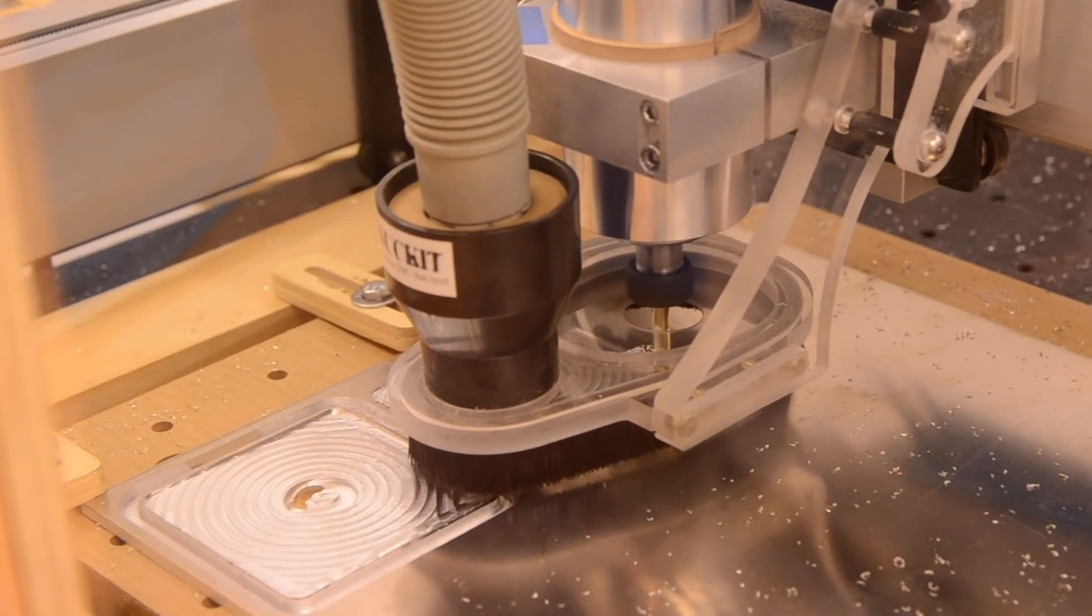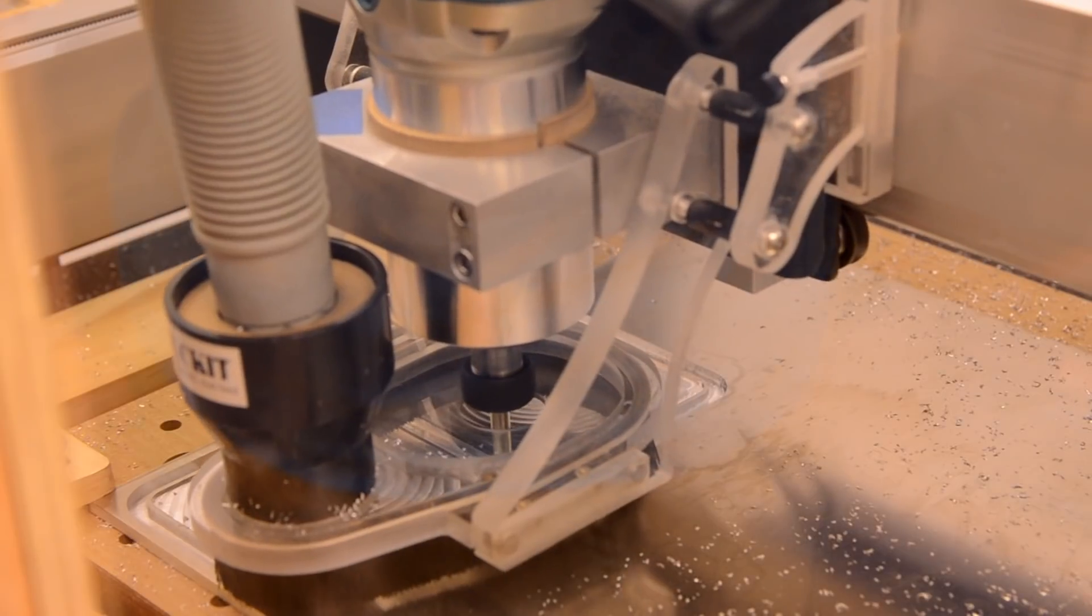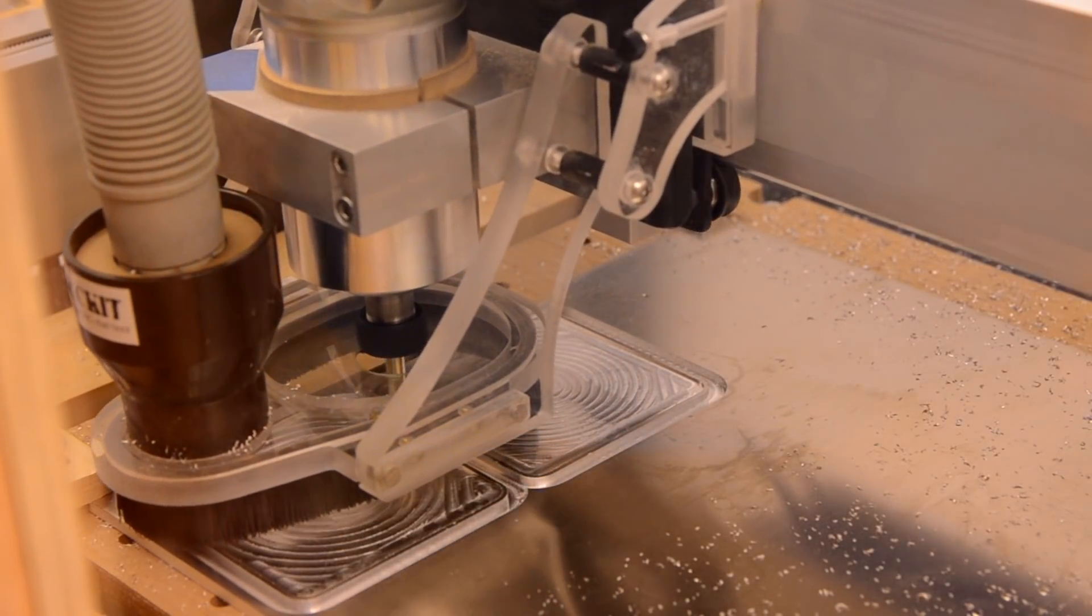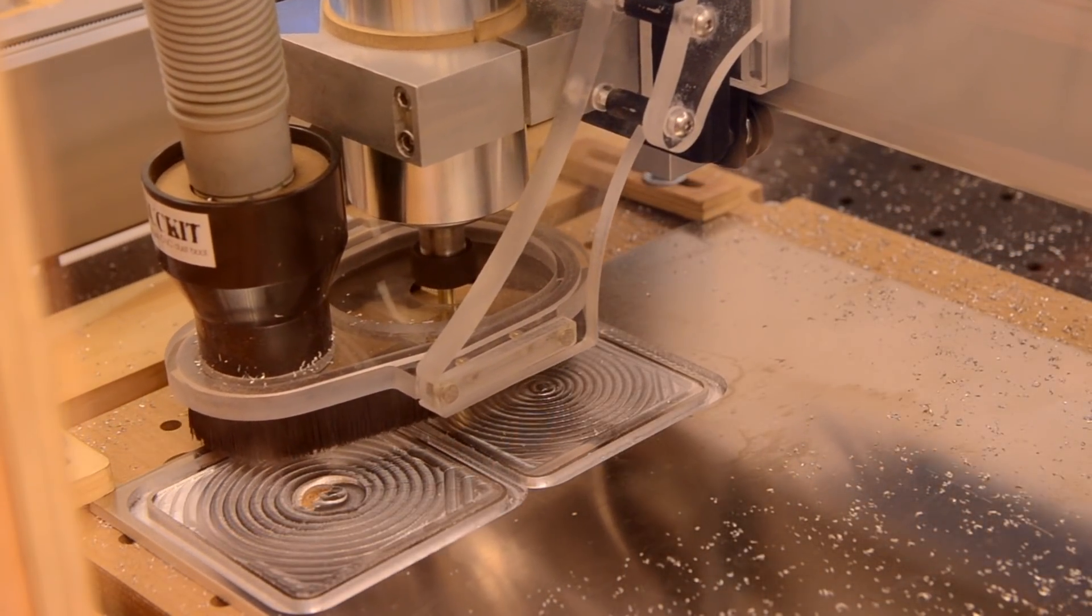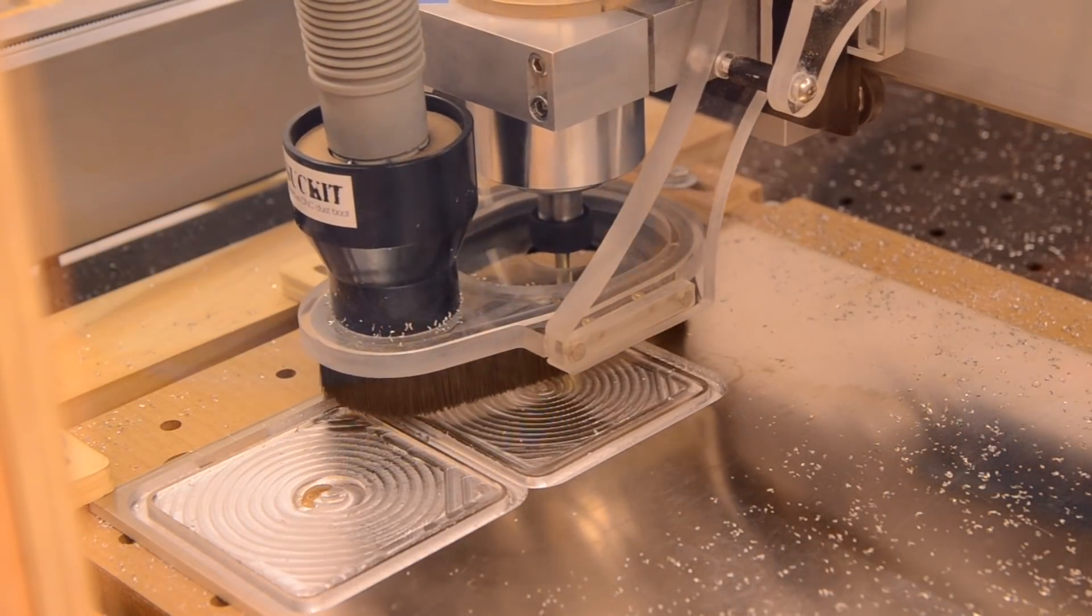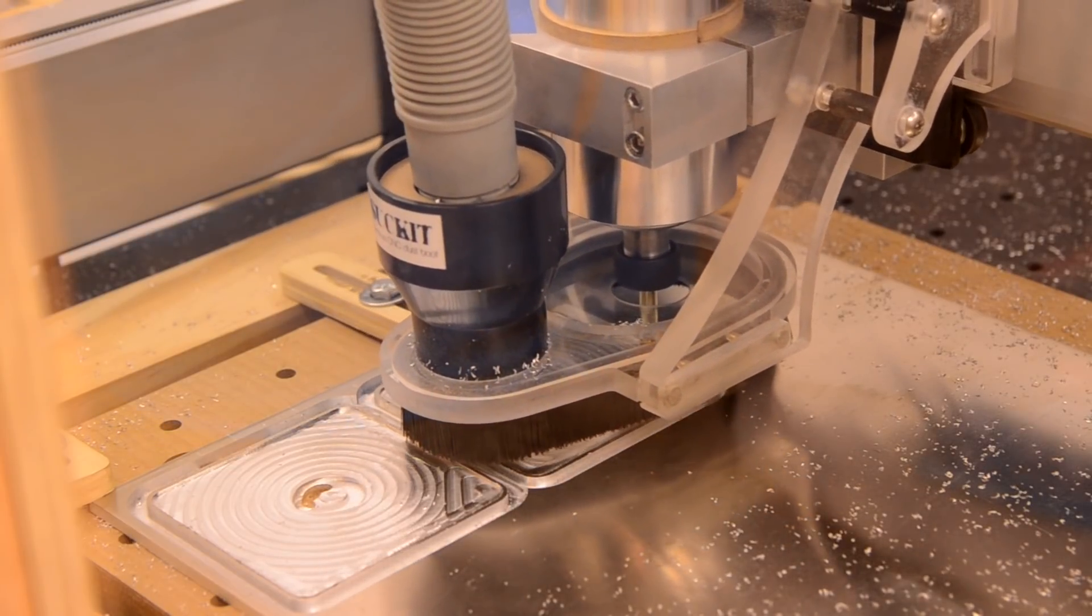The first few coasters were touch and go as I fine-tuned my feeds and speeds. I wanted to run at a more aggressive pace to save time, but I was forced to scale back due to some unwanted vibrations during cutting. I backed down from a feed rate of 30 inches per minute to 25 inches per minute and decreased the optimal load parameter in my adaptive clearing toolpath to about 0.1 inches. Then I proceeded to test the second operation, the cutout of the coaster blank.